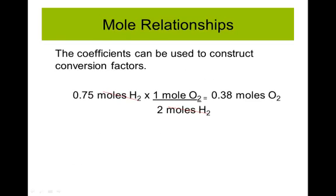We can use those coefficients to help us convert. If I start with 0.75 moles of hydrogen, I know from the equation that one mole of oxygen corresponds to two moles of hydrogen. Putting hydrogen on the bottom so it cancels, I take 0.75 times one divided by two, which gives me 0.38 moles of oxygen — basically about half as much oxygen as hydrogen.